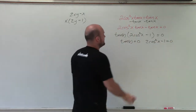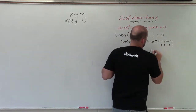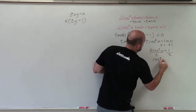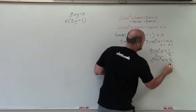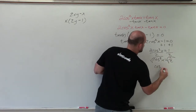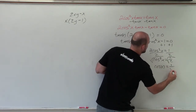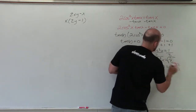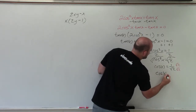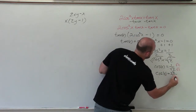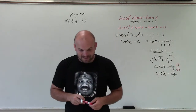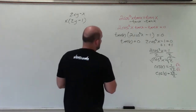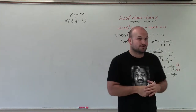Now I solve the cosine equation. Adding 1 to both sides gives 2 cosine squared of x equals 1. Dividing by 2 gives cosine squared of x equals one half. Taking the square root gives cosine of x equals 1 over the square root of 2. After rationalizing the denominator, cosine of x equals square root of 2 over 2. So our two cases are: tangent of x equals 0, and cosine of x equals square root of 2 over 2.